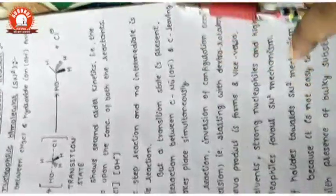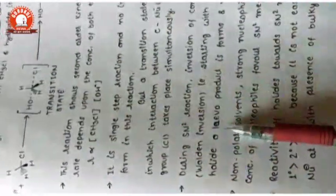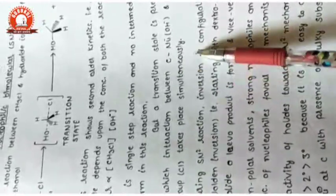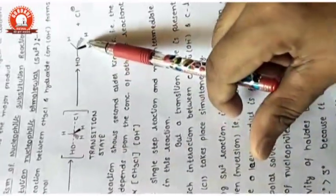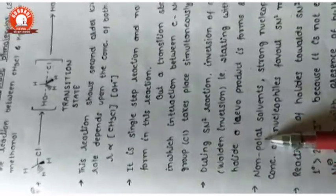In the transition state, the interaction between the nucleophile OH and the leaving group Cl takes place simultaneously — this is called inversion. Inversion means the configuration is reversed: if the reactant is D-type, the product is L-type, and if the reactant is L-type, the product is D-type. Since no ionic stage is present, SN2 is carried out in nonpolar solvents.